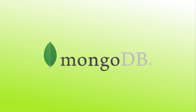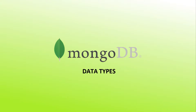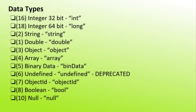Welcome to the world of MongoDB. In this section, we cover MongoDB data types. In MongoDB, data is stored in BSON format — Binary encoded format of JSON, which is essentially a binary representation of the JSON format.